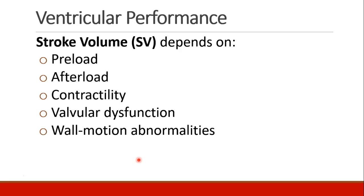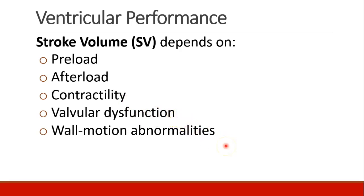Stroke volume depends on several different variables that we'll discuss here: the preload, the afterload, the contractility, any valvular dysfunction, and any wall motion abnormalities.